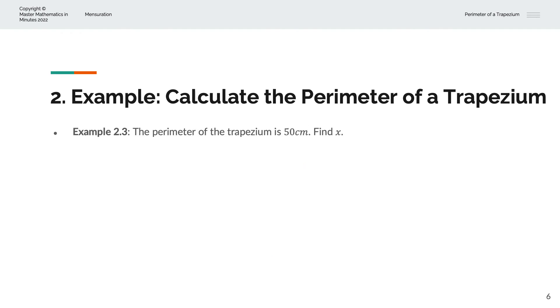In the third example, we're given the perimeter of the trapezium is 50 centimeters. And we're asked to find X. So visually, we have a trapezium of sides 10 centimeters, 12 centimeters, and 17 centimeters. And we're asked to find the side X.